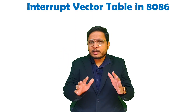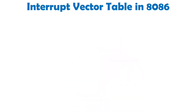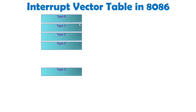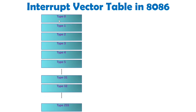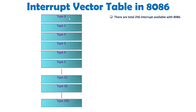So everything I'll be explaining in this video — you should understand what IVT is, how it works with 8086, and how program control is transferred to a well-defined memory location. With 8086, we have a total of 256 interrupts, starting from type 0 to type 255.